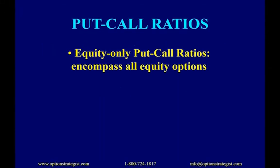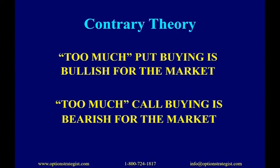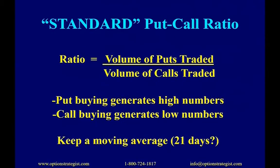The next indicator is the put-call ratio. We look at the equity-only put-call ratio, meaning all stock options that trade — millions of options per day — but we exclude futures options and index options. It's a contrary indicator: if too many people are buying puts, there's too much bearishness, so we want to do something bullish. Conversely, if too many people are buying calls, everyone is bullish and we want to do something bearish. We need to quantify what 'too much' means.